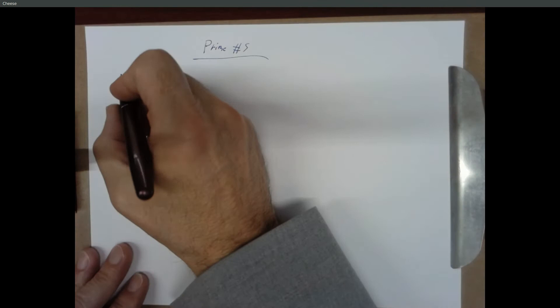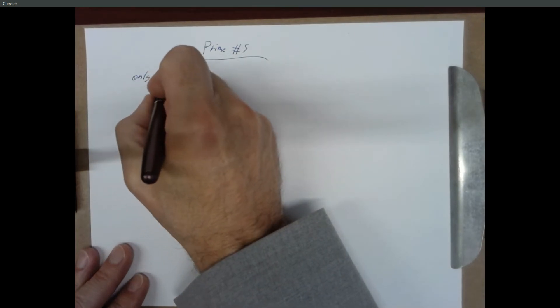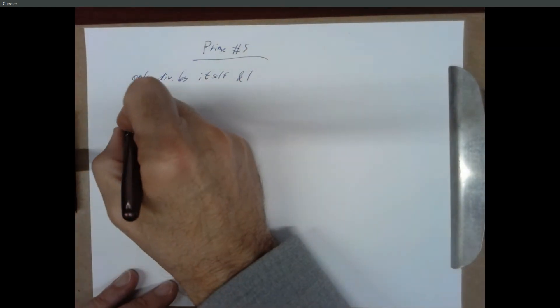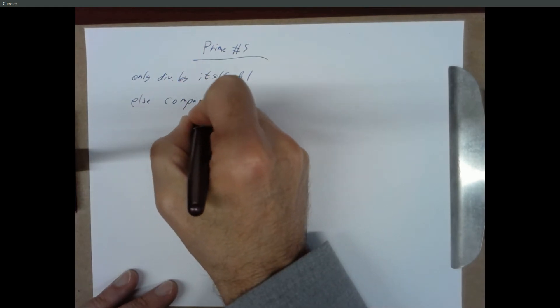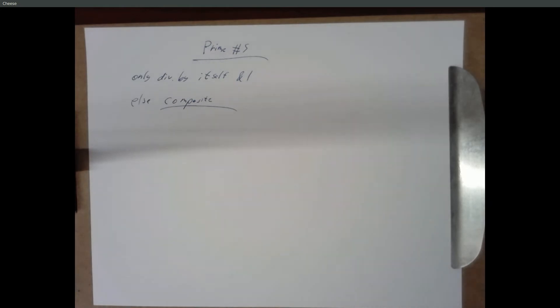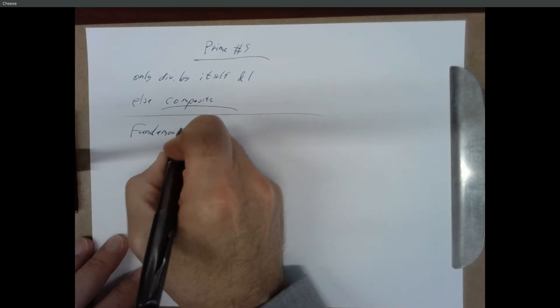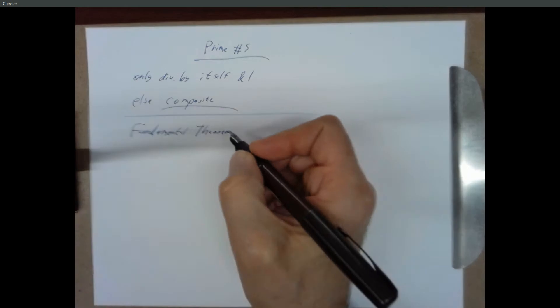So you remember what a prime number is? It's a number that's only divisible by itself and one. And if it's not prime, we say it's composite. Every number other than one is either prime or composite — one we just don't talk about a lot. And primes are particularly useful because of something called the fundamental theorem of arithmetic.